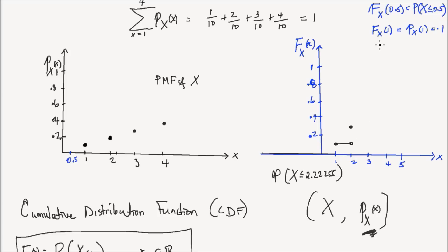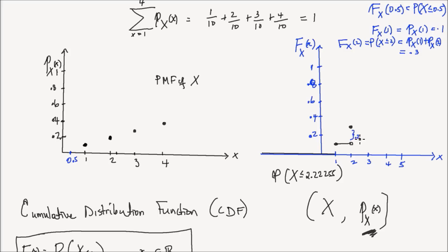The CDF at 2 — F of x of 2 — is the probability that x is less than or equal to 2, which is the probability at 1 plus the probability at 2. That is 0.1 plus 0.2, which is 0.3. So this jump is by an amount equal to 0.2, which is the PMF at x equals 2. Once it jumps, it stays constant until you encounter a probability mass again, and the jump at 3 is going to be by 0.3, so from here it jumps up to 0.6.